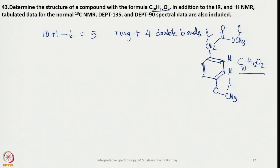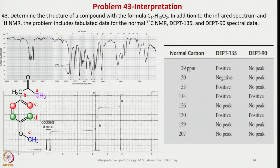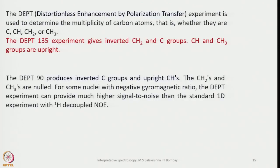The 2 doublets are in the aromatic region. From this we can tell the structure: signal A corresponds to CH3 (ester methyl), signal B to the methylene group next to the carbonyl, signal C to the methoxy group, and signals D and E are the two doublets of the para-substituted aromatic ring protons coupled to neighboring CH. Now regarding the DEPT experiment: DEPT stands for Distortionless Enhancement by Polarization Transfer, and is used to determine the multiplicity of carbon atoms — whether they are quaternary, primary, secondary, or tertiary.